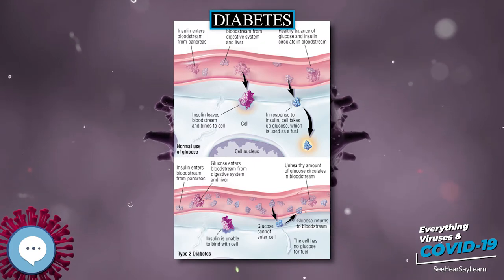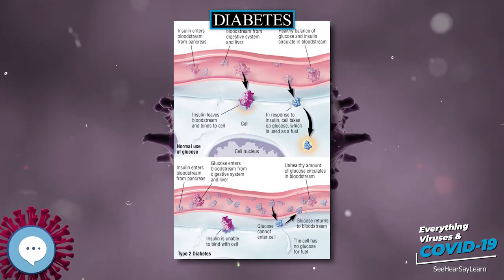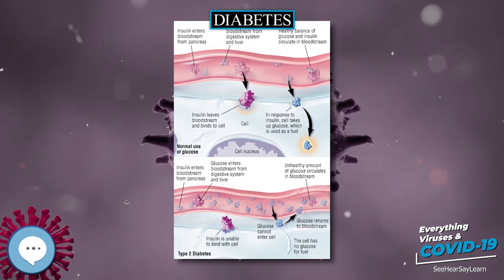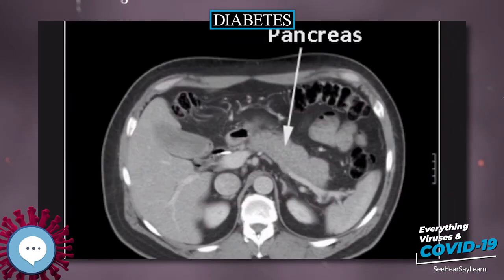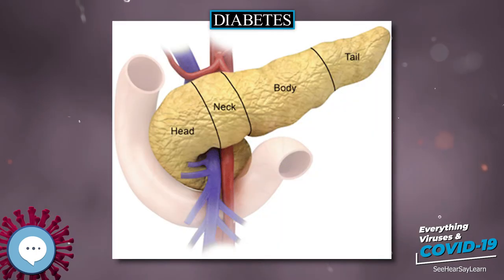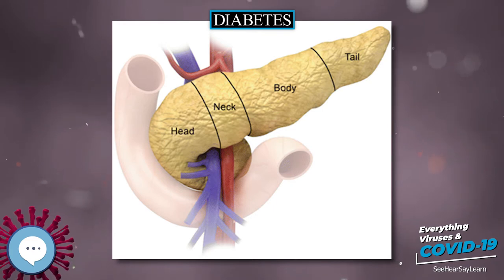There are three main types of diabetes mellitus. Prevention and treatment involve maintaining a healthy diet, regular physical exercise, a normal body weight, and avoiding use of tobacco. Control of blood pressure, maintaining proper foot care, and eye care are important for people with the disease.